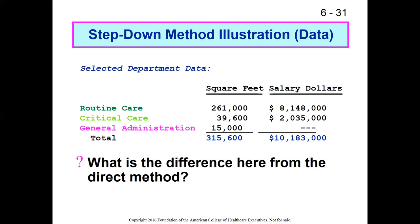We're not going to allocate to housekeeping either, because under the step-down method, those costs have already been passed down — there's nothing left in housekeeping. So we ignore salary dollars for general administration, but we do pay attention to square footage, because we're going to allocate a portion of facilities' costs to general administration first, before allocating to routine care and critical care. What we're trying to do is get a more precise cost for the provision of general administration services.